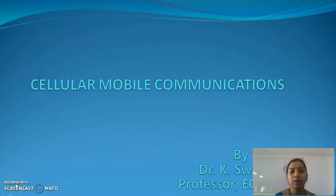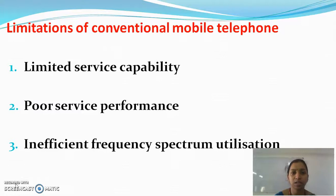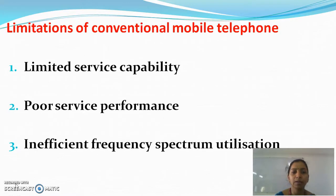This lecture is mainly regarding why cellular mobile telephone systems became so much popular. Before understanding that, we must know the main limitations of conventional mobile telephone systems. There are mainly three limitations: limited service capability, poor service performance, and inefficient frequency spectrum utilization.